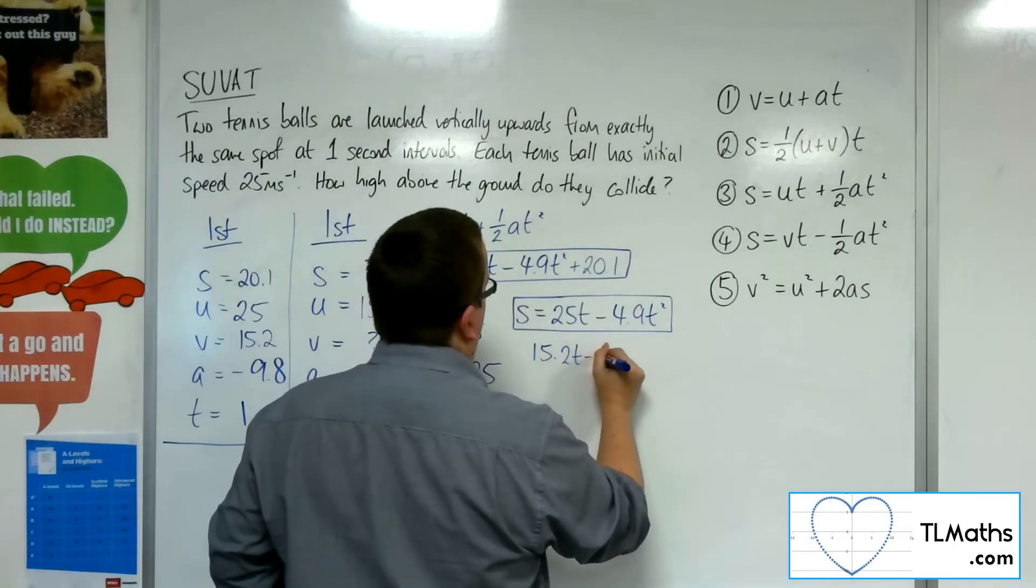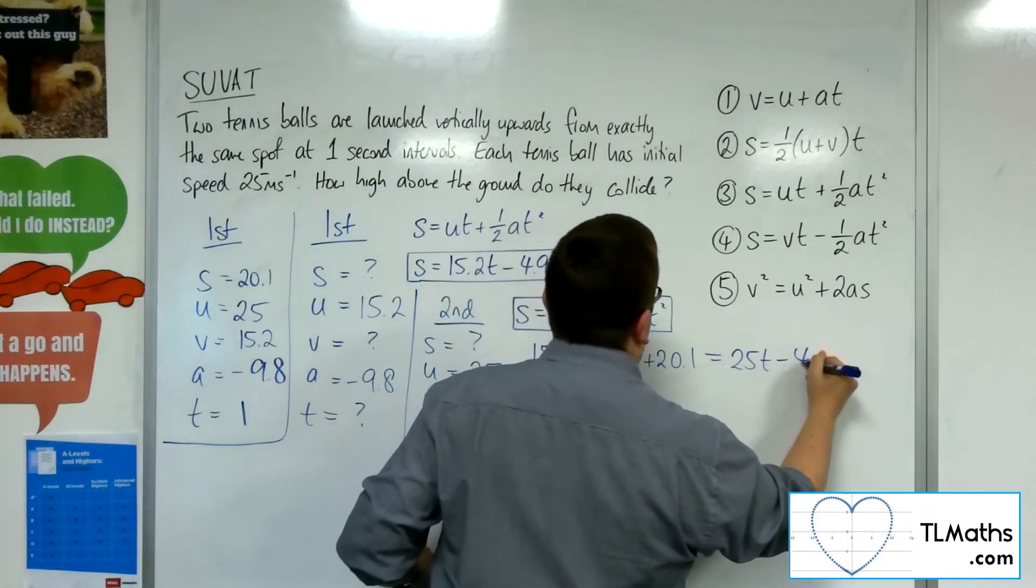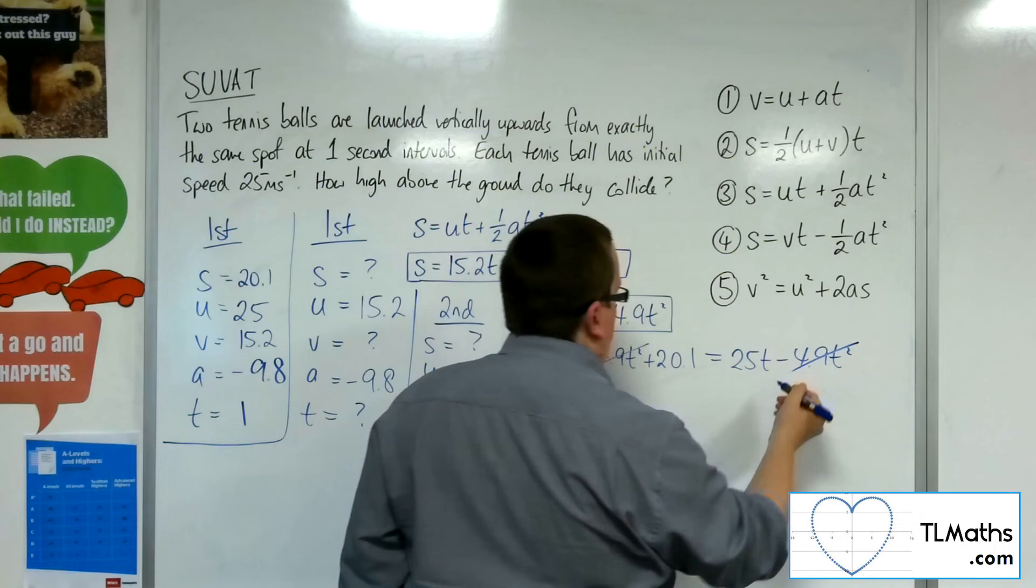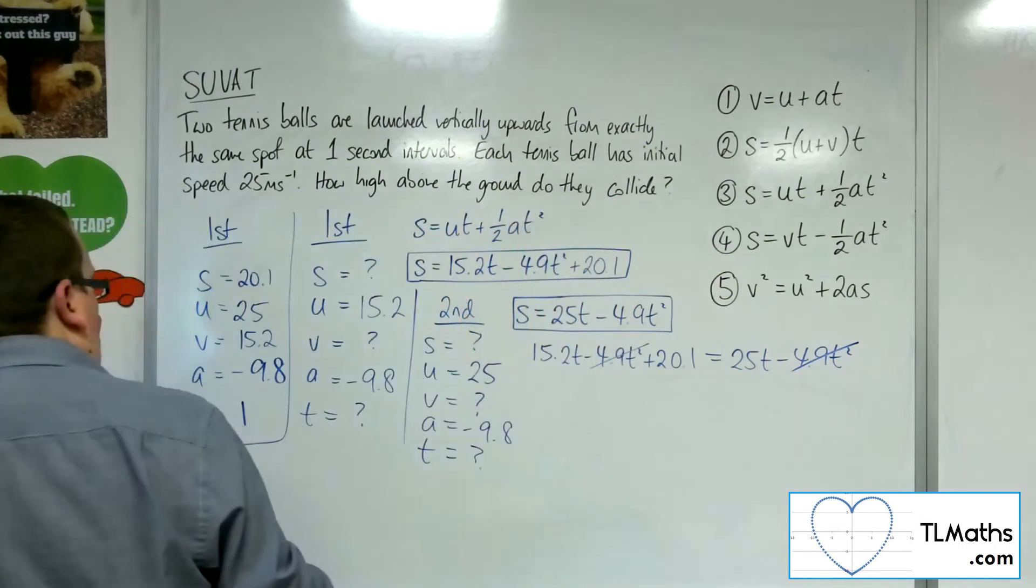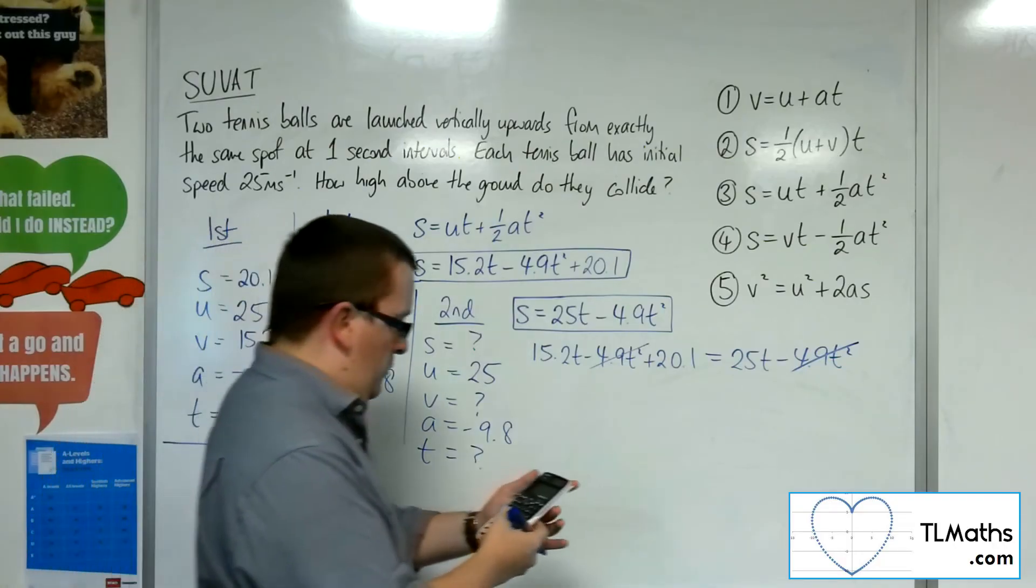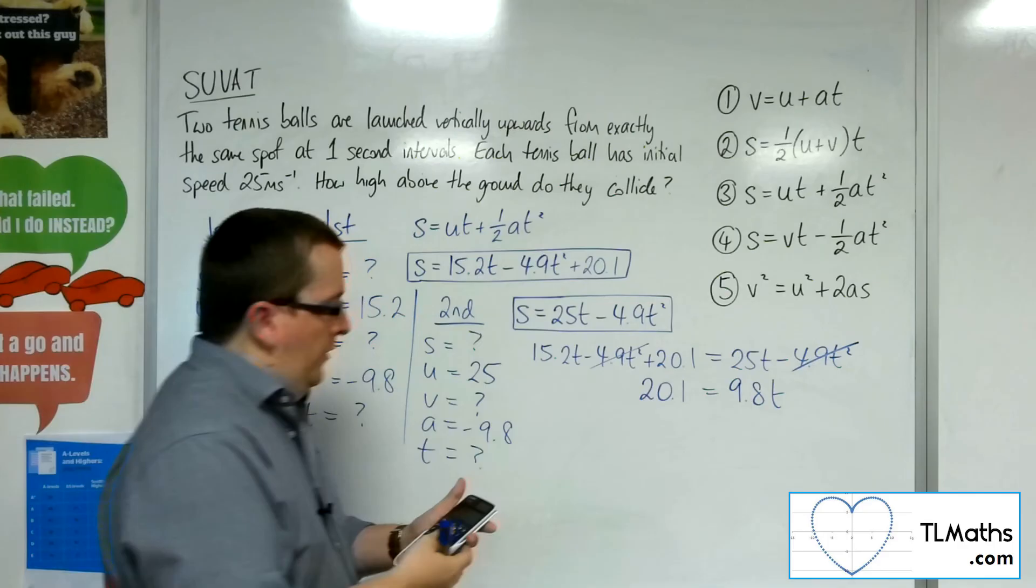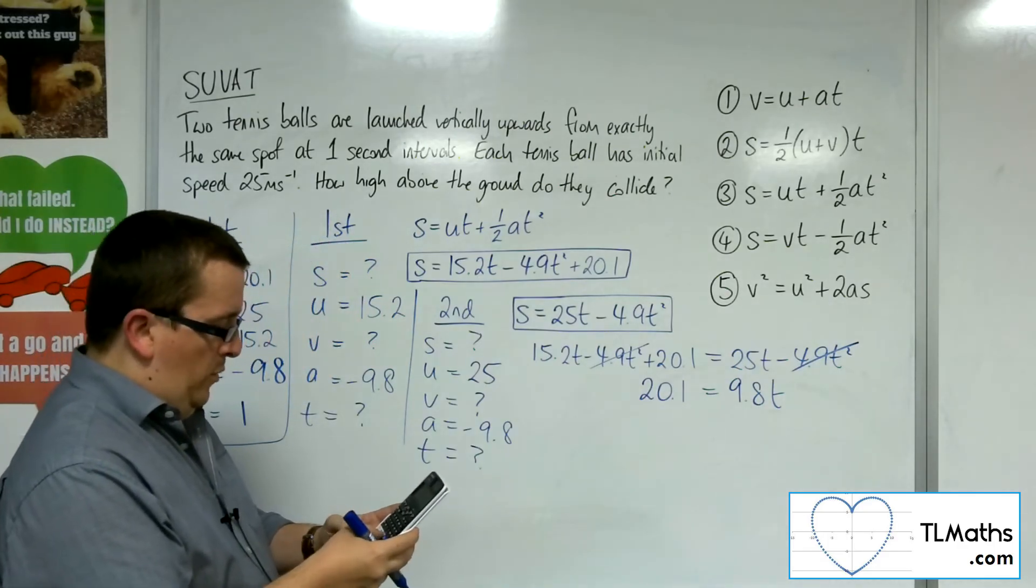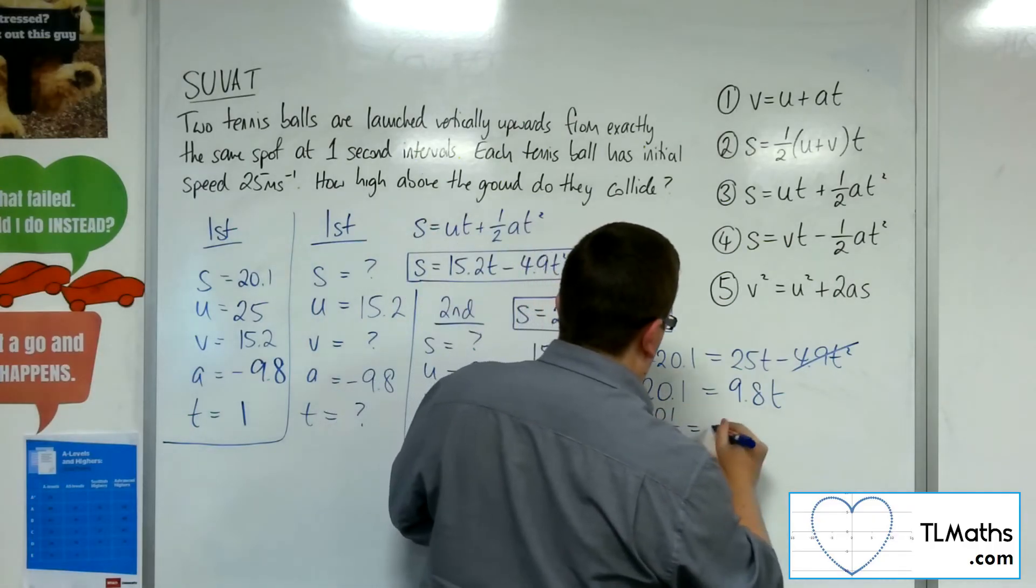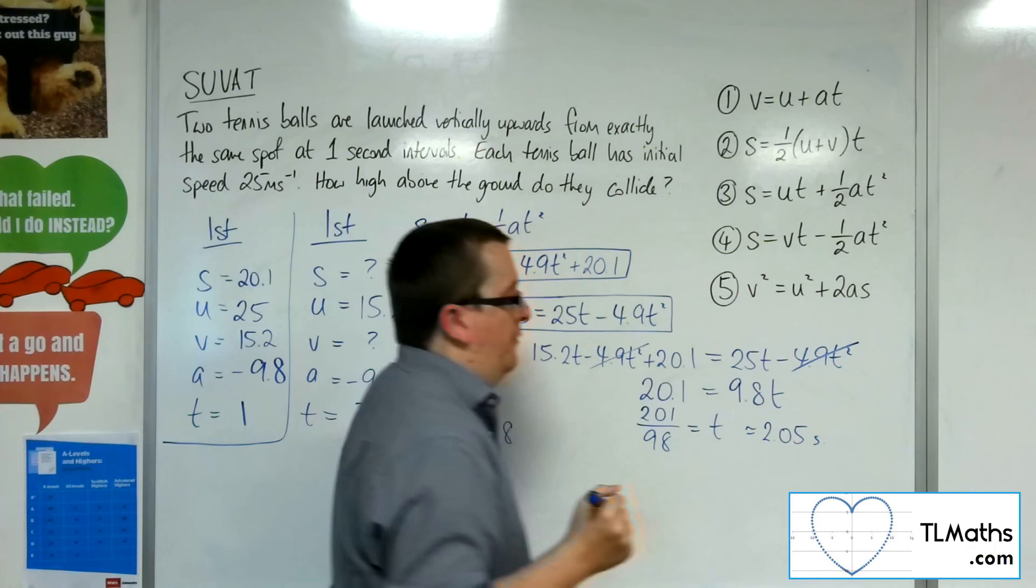So what I can do, and the displacements I want to be the same as well, so I can put one equal to the other. So I'm going to put the 15.2T take away 4.9T squared plus 20.1 equal to the 25T minus 4.9T squared. Now, the 4.9T squareds, they cancel. So now, I can subtract the 15.2T from both sides. 25 take away 15.2 is 9.8. So I've got 9.8T equals 20.1. So if I do 20.1 divided by 9.8, I get 201 over 98 as the time, which is approximately 2.05 seconds.